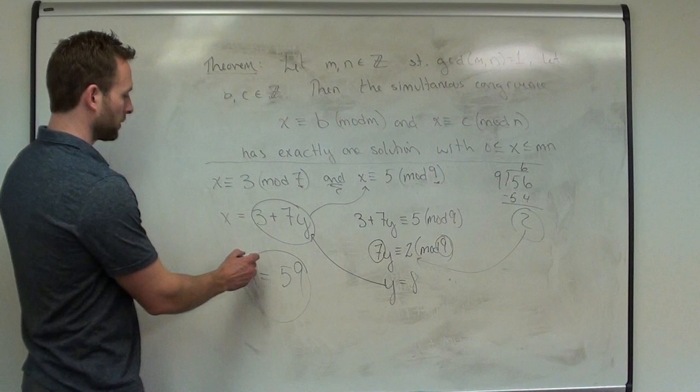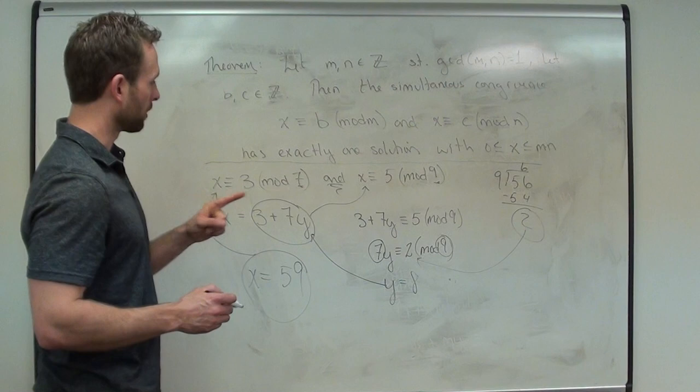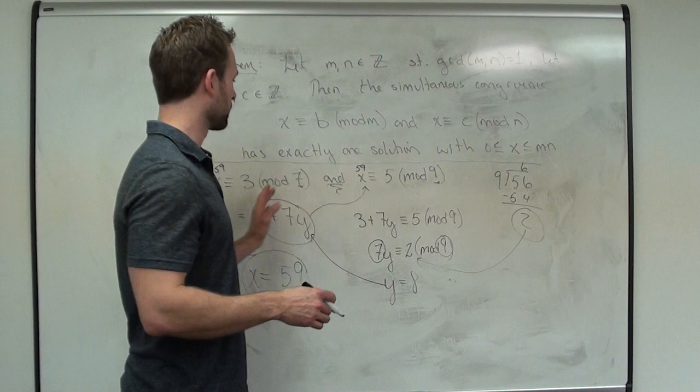If we check: 59 mod 7 is 3 — check. And 59 mod 9 is also 5. So 59 is the one number that gives us both 3 and 5 simultaneously as mod 7 and mod 9. That is our Chinese Remainder Theorem applied here.